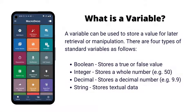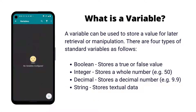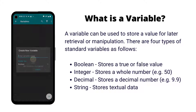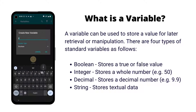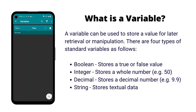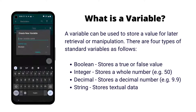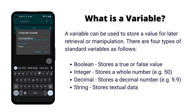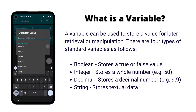There are four standard types of variables. Boolean variables store either true or false and can be used to model a simple binary state such as a light switch being on or off. Integer variables store a whole number, for example as a counter of how many times a certain event happens.